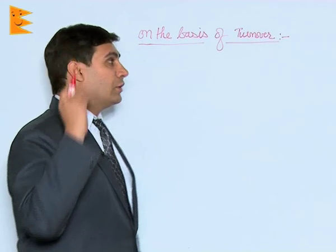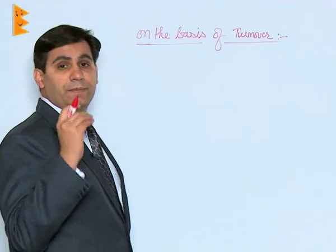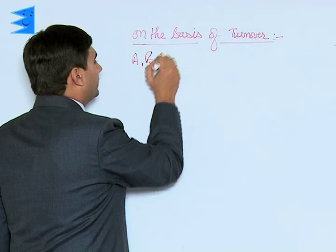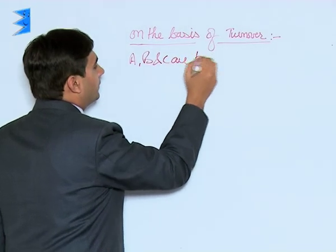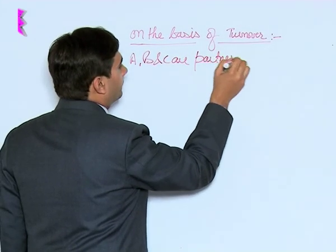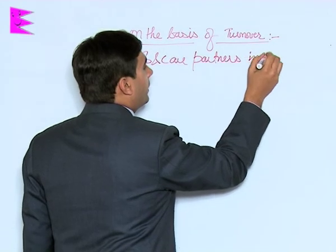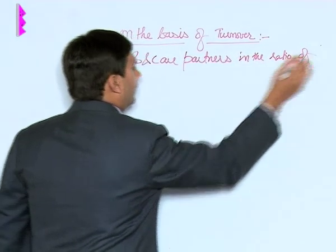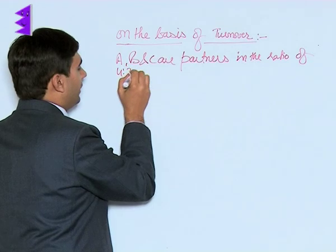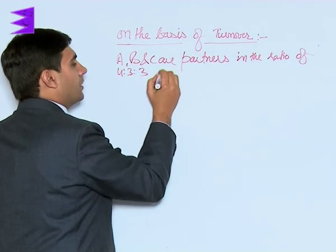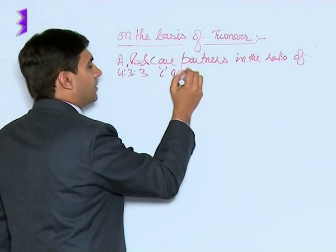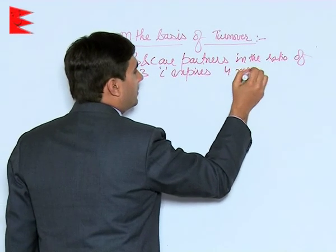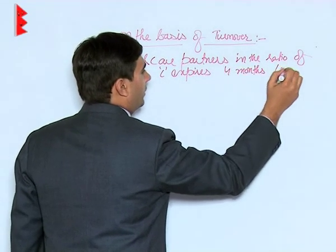Let us understand this by taking an example. Let's say A, B, and C are partners in the ratio of 4:3:3. C expires four months from the date of the balance sheet.